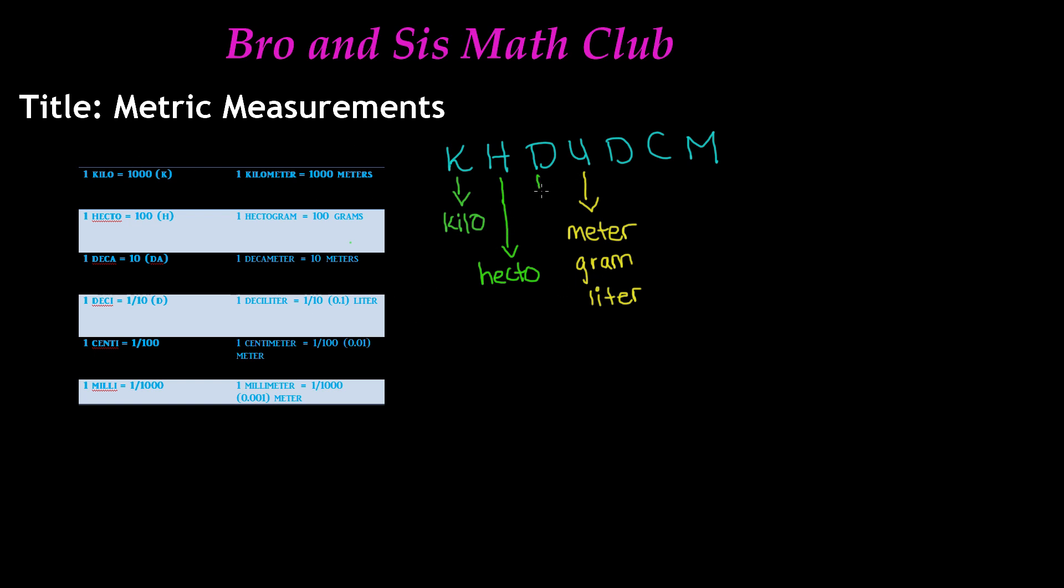Now there are two Ds. The first one is deka, which is spelled two ways: D-E-C-A or D-E-K-A. Either spelling is fine. Deka means 10, and the symbol is DA. An example is one dekameter equals 10 meters.